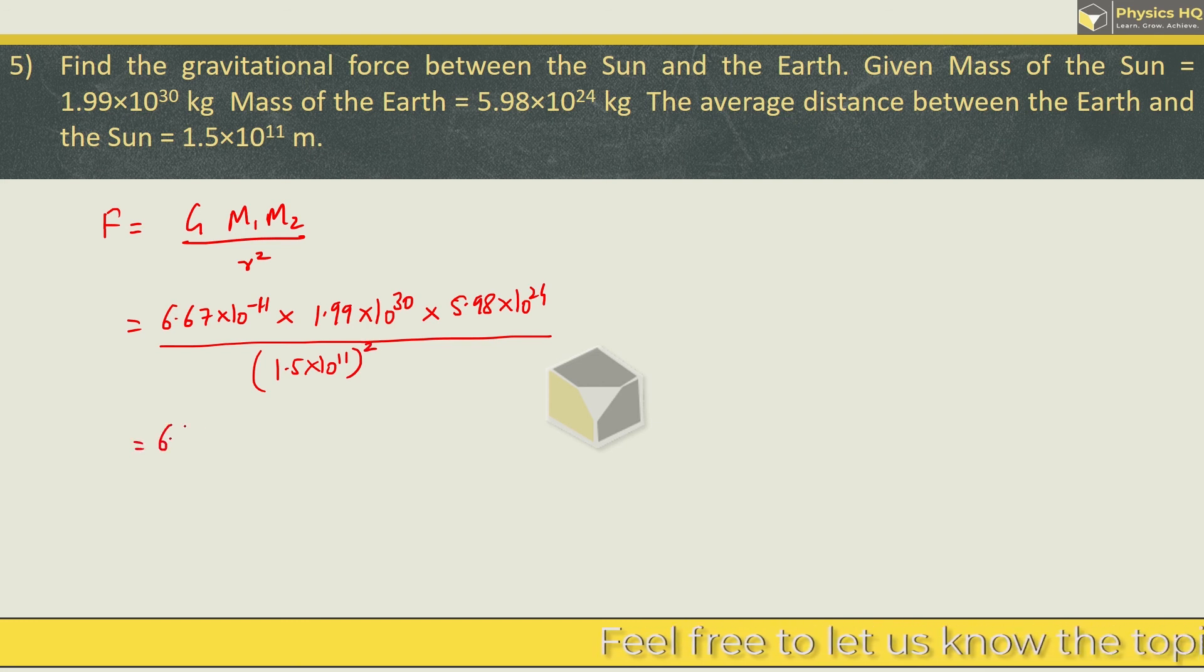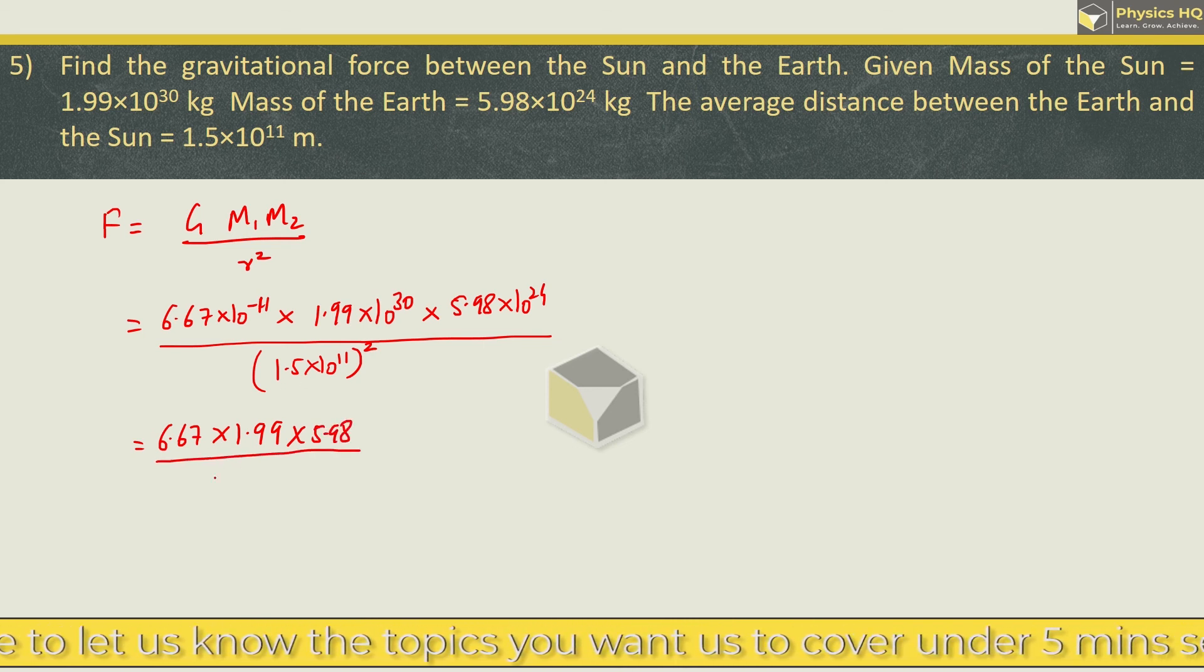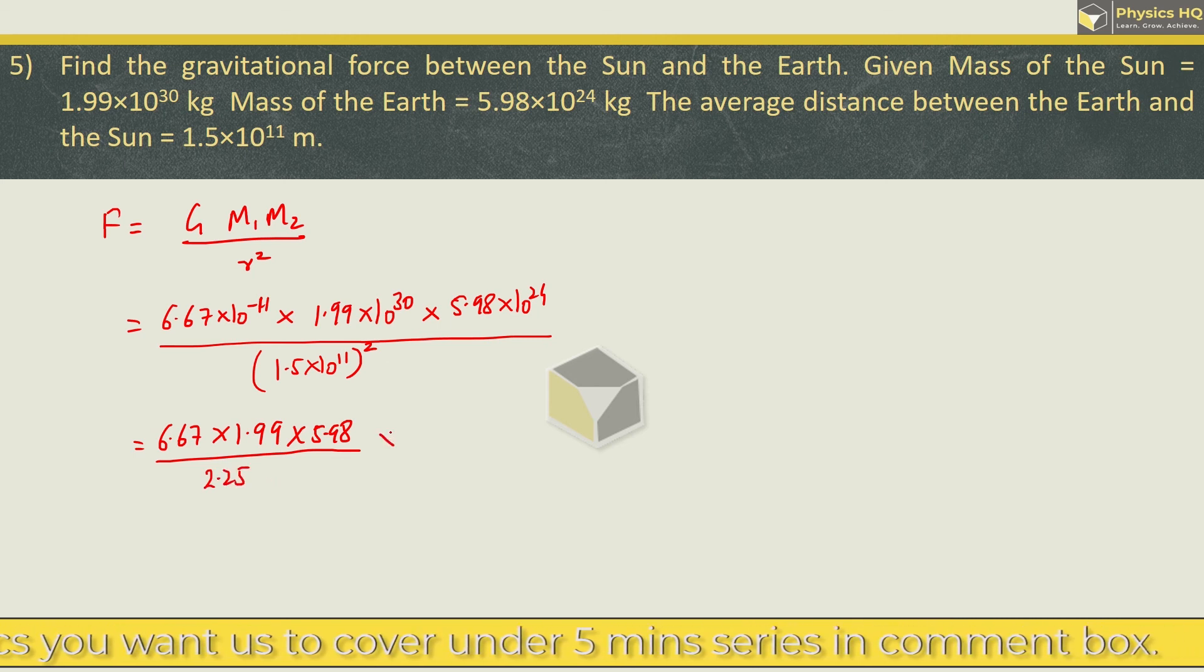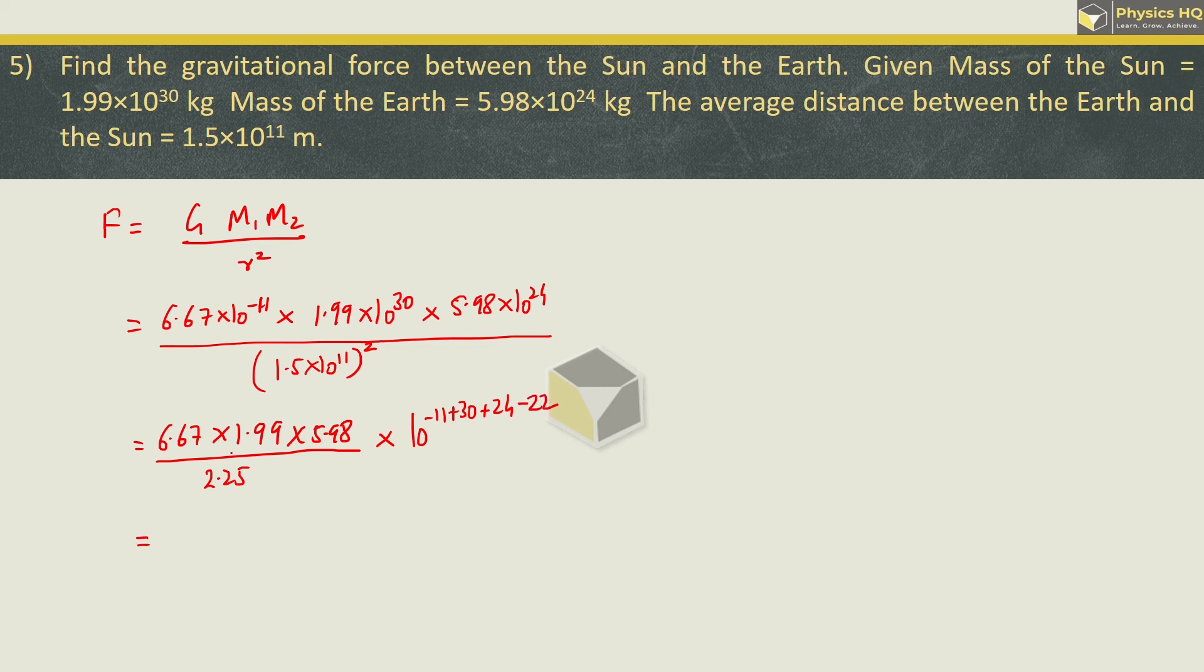Divided by distance between them is 1.5 into 10^11 squared. So this is 6.67 into 1.99 into 5.98 divided by, in denominator 1.5 squared is 2.25. And 10 to the powers: first we got 10^-11, then we have plus 30 plus 24, and denominator has 10^11 squared which is 22, which goes to numerator as minus 22. Now they have given this value specifically as 1.99 and 5.98 so precisely for a reason, so that we use it. You have to use log so that you can solve sums precisely. There's no shortcut here.